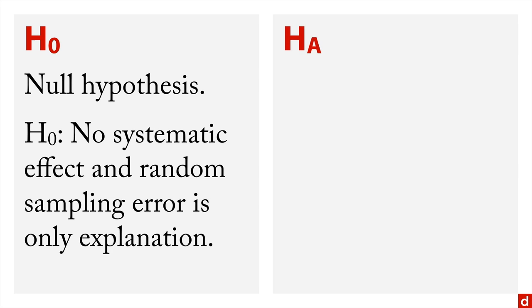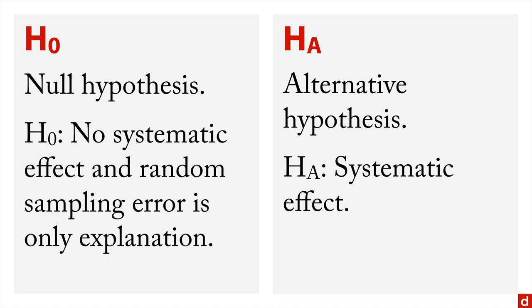Contrast that with Hₐ, which is the alternative hypothesis. This really just says that there's a systematic effect, that there is in fact a correlation between variables, a difference between two groups, or that one variable does predict the other.